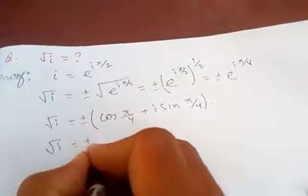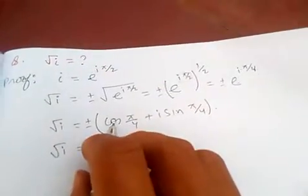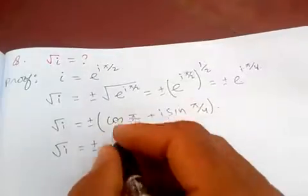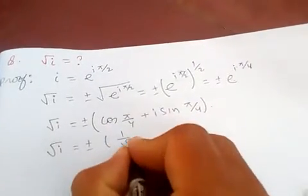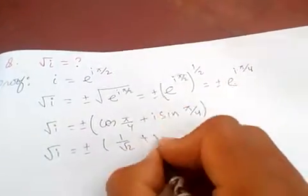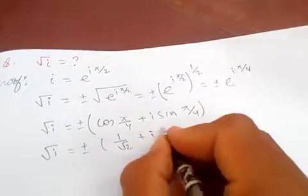Which is, root of i is equal to plus minus, and cos of pi over 4 is just 1 over root 2, and sin also same thing, times i.